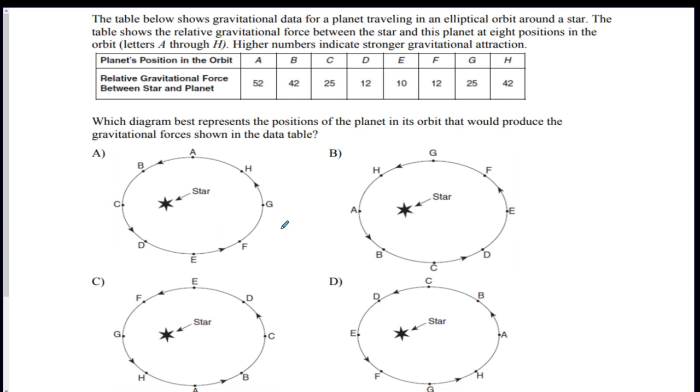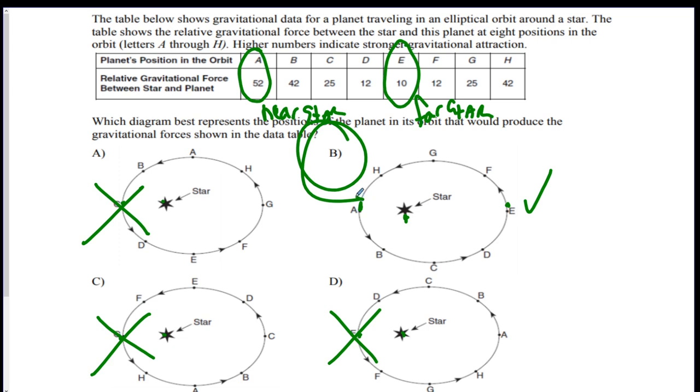And the last one. So this table shows gravitational data for a planet traveling in an ellipse. The table shows force between the star and the planet. So it shows you, like, gravitational force. So A is the highest, and E is the lowest. So you want A to be nearest the star, and then E to be farthest away from the star. So let's see which one that is. Here's the star. A is close. E is furthest. This is good. Here's the star. C is closest. This is bad. Here's the star. G is closest. This is bad. Here's the star. E is closest. This is bad. So B is the best answer. It shows A is the closest, so this would be the highest gravity. E would be the lowest gravity. And then it decreases from A to E. A, B, C, D, E. It's getting slower and slower. And then it increases again from F, G, to H, back to A.